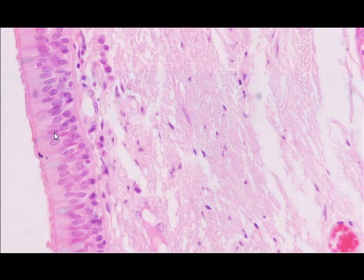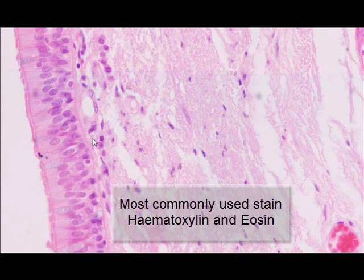Staining, in simple terms, is the use of colors that are added to a tissue to help identify different structures. Without these added colors, some of these structures become difficult to differentiate from others, especially for beginners who do not have the wealth of experience and knowledge that trained pathologists have. The most commonly used stain is hematoxylin and eosin.